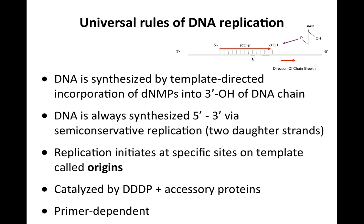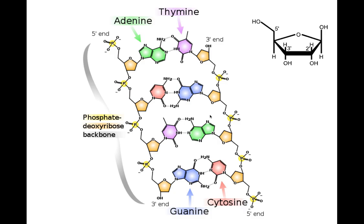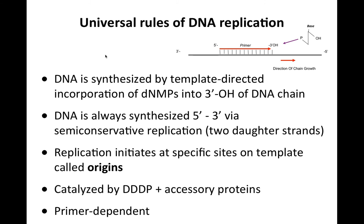That's what we mean by template-directed, and the three-prime hydroxyl is where new bases are added. So DNA is always synthesized in a five-prime to three-prime direction. The three-prime end is the end of DNA which has the hydroxyl, and that is where new bases are added in DNA synthesis. The five-prime end is the end with the phosphate by convention. The template is read in a three-prime to five-prime direction, but the product is always made in a five-prime to three-prime direction — things you just have to know, and remembering them will make everything else easier.